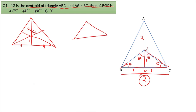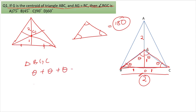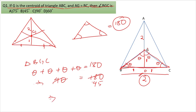The interior angles of any triangle sum to 180 degrees. For triangle BZC, we get theta + theta + theta + theta = 180 degrees, so 4θ = 180°, giving θ = 45°. Angle BZC equals 2θ = 90 degrees. Hence option C is the correct answer.